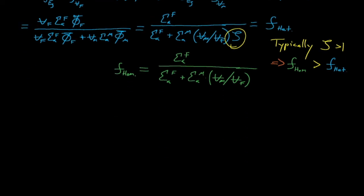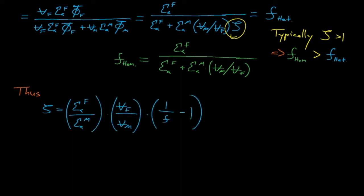This gets us somewhere. If we look at the equation for our heterogeneous thermal utilization factor, then we can rearrange our terms to develop an expression for the cell disadvantage factor. But in a way, we've really just kicked the can down the road, because we now need to calculate the thermal utilization factor to be able to calculate our cell disadvantage factor to be able to compute our average cross-sections for the homogenized cell. So how do we do this?